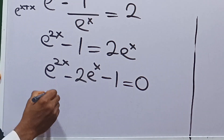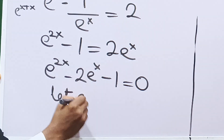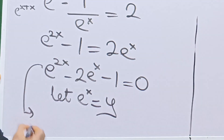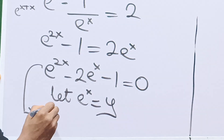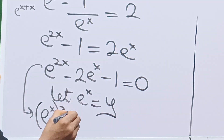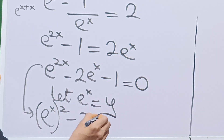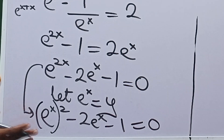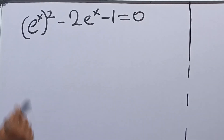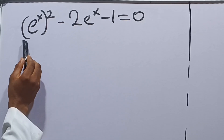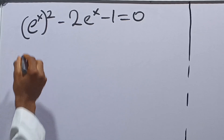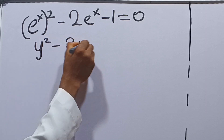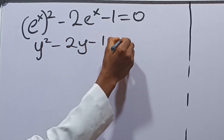From here, let e raised to the power x be equal to y. This expression can be written as e raised to the power x, all squared, minus 2e raised to the power x minus 1 equals 0. Replacing e raised to the power x with y, we have y squared minus 2y minus 1 is equal to 0.